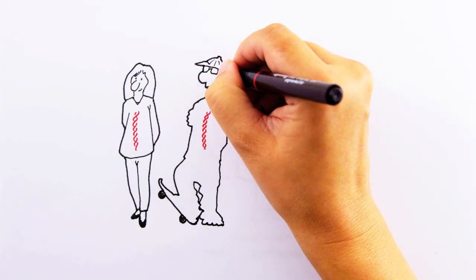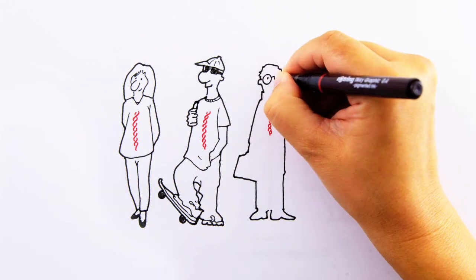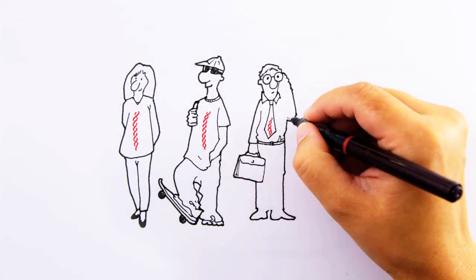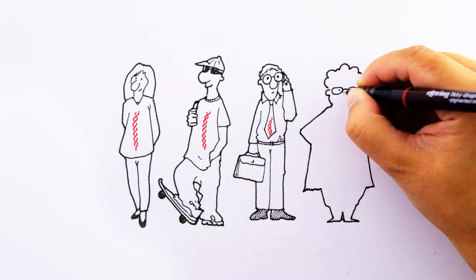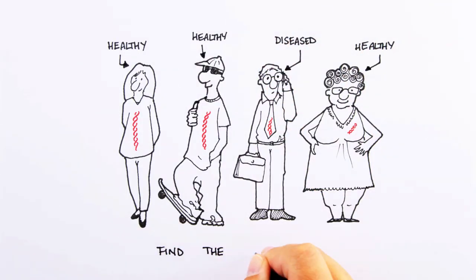One approach to finding new drug targets involves comparing the genes of healthy individuals with those of people with the disease. The differences between the two genetic maps can help generate hypotheses on which proteins, or lack thereof, cause the disease.